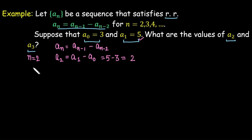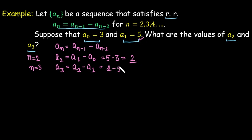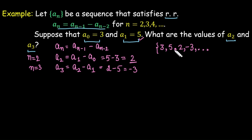Similarly, to find a(3), substitute n = 3: a(3) = a(2) − a(1) = 2 − 5 = −3. So the sequence starting with a(0) = 3 goes: 3, 5, 2, −3, and follows this subtraction pattern. Subtracting the last two terms: 2 − (−3) gives −5, and so on.